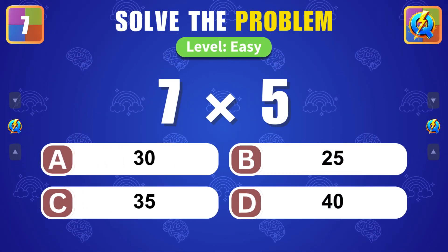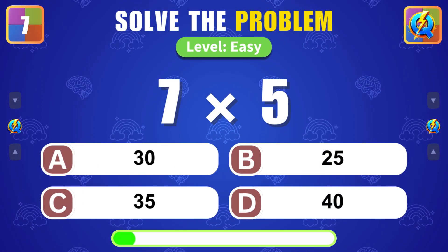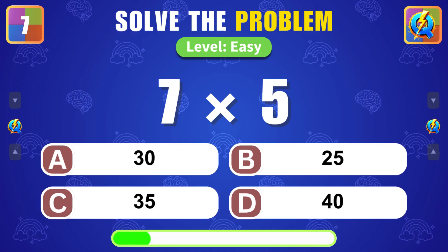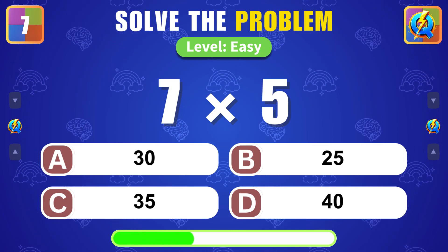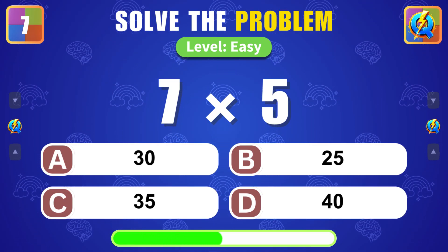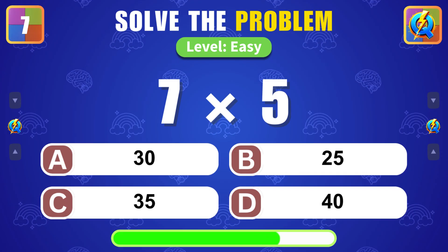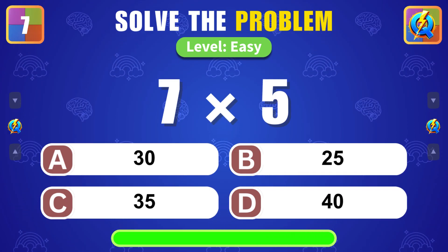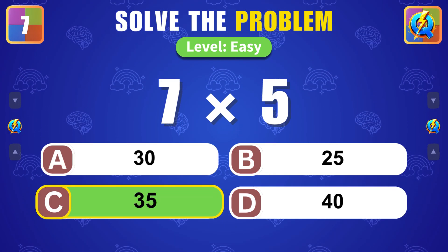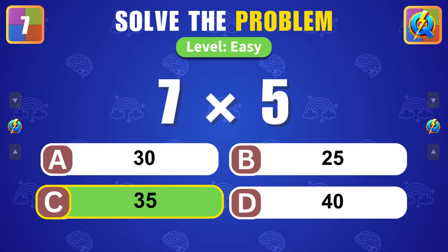What is the result of 7 times 5? Excellent. The answer is 35.